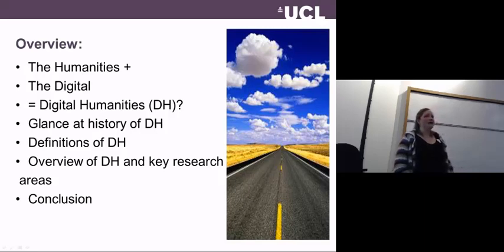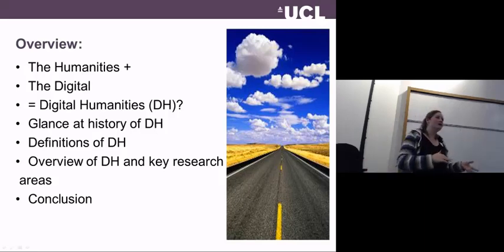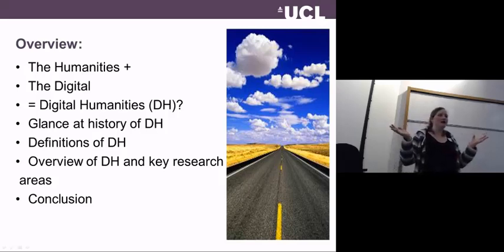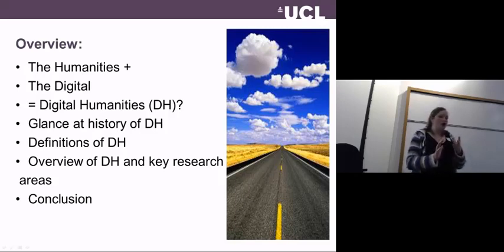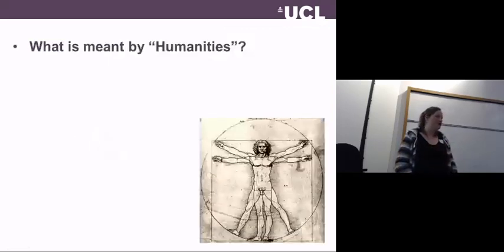I'll start by saying briefly what the humanities is, then I'll say briefly what is digital, then I'll ask whether digital humanities is simply the humanities made digital. I may also take a glance at the history of DH, and then look at more concrete definitions and examples of what digital humanities is and is not.